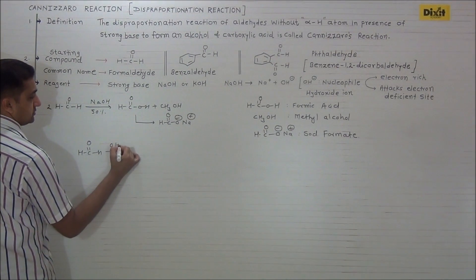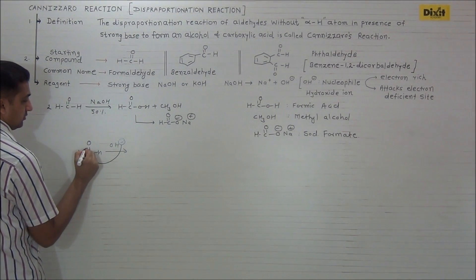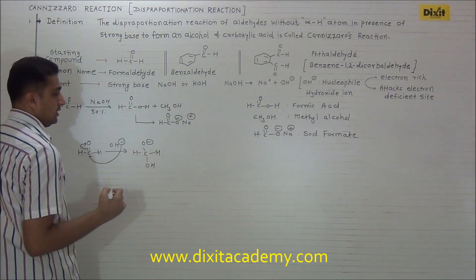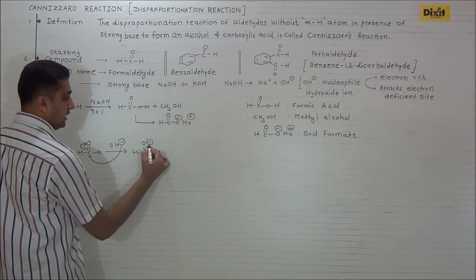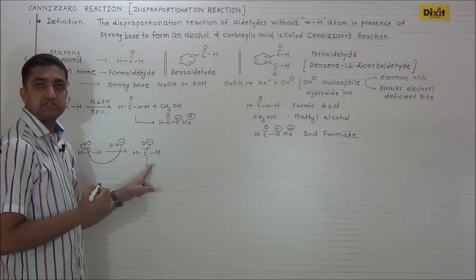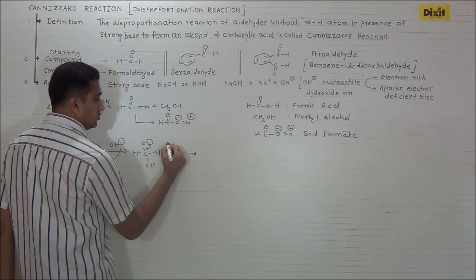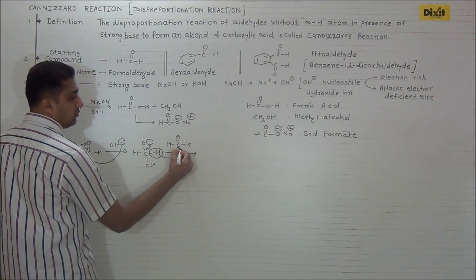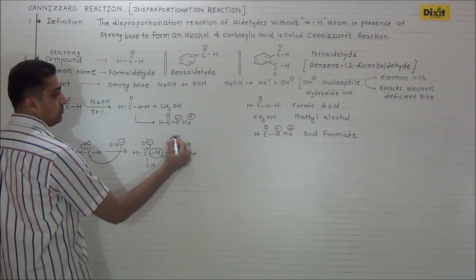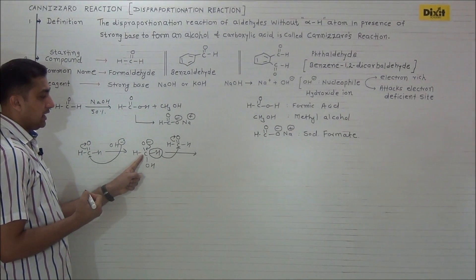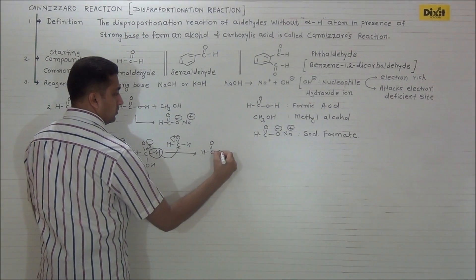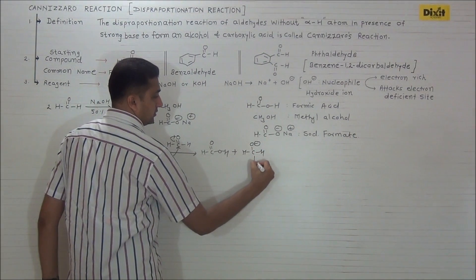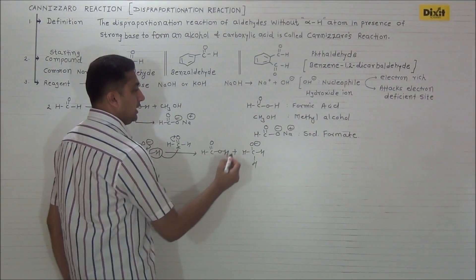Formaldehyde in presence of strong base: nucleophile OH⁻ attacks on carbonyl carbon, pi bond breaks on oxygen forming H-C(O⁻)-OH. As this negative charge on oxygen is localized, it immediately forms a pi bond with carbon. In due course, another aldehyde molecule present in the reaction mixture — the hydride group gets shifted onto the carbonyl carbon of another aldehyde molecule. Pi bond breaks on oxygen and if a double bond forms between oxygen and carbon, we get H-COOH (formic acid) plus H-CO⁻ (methoxide ion).